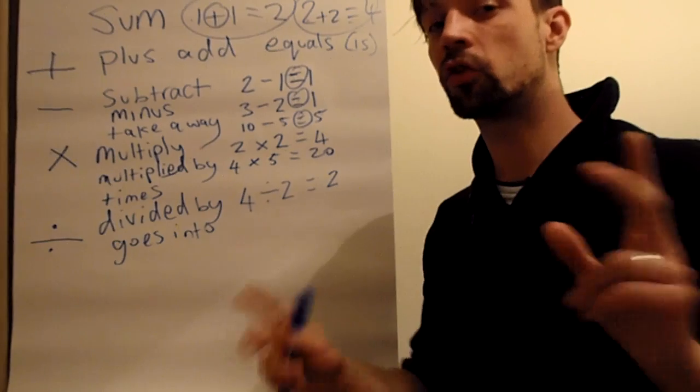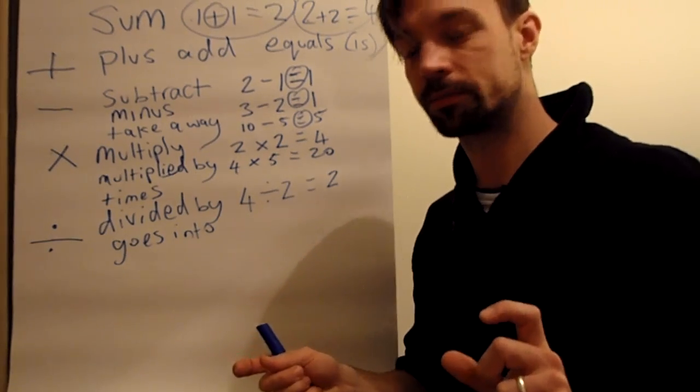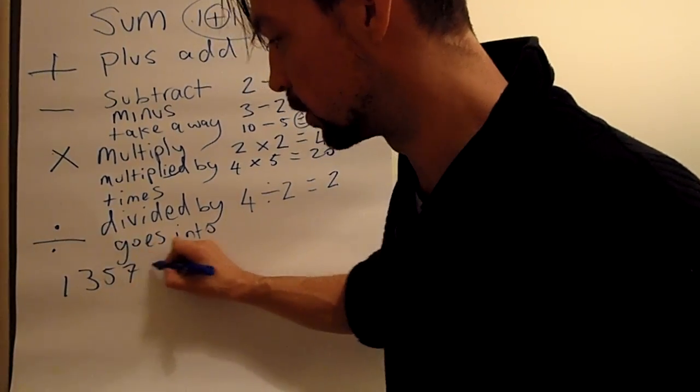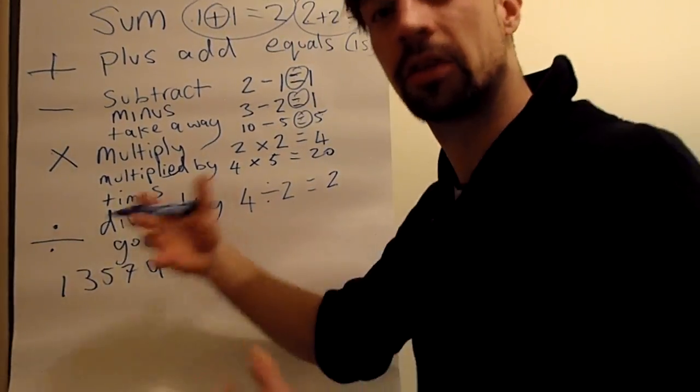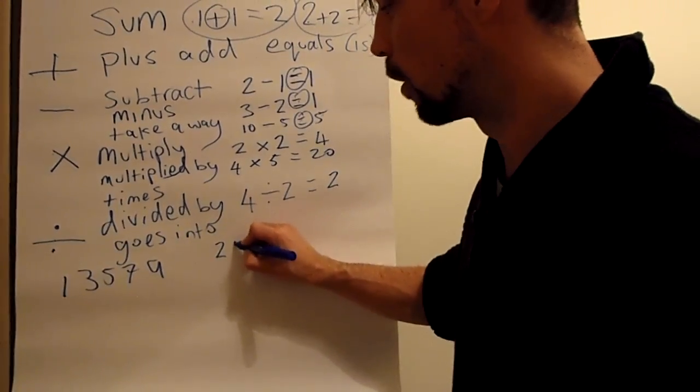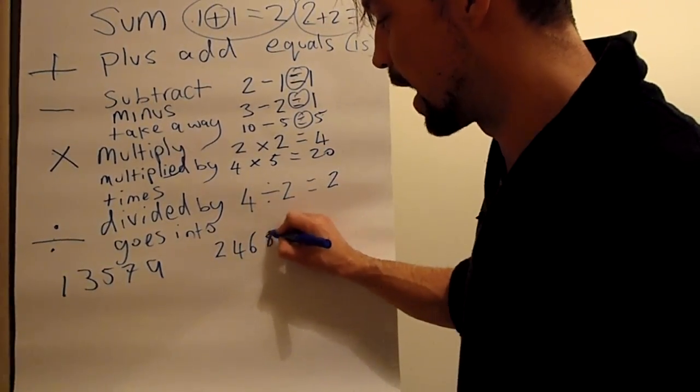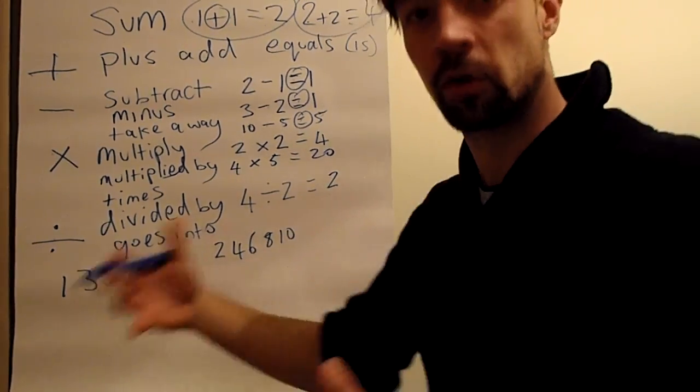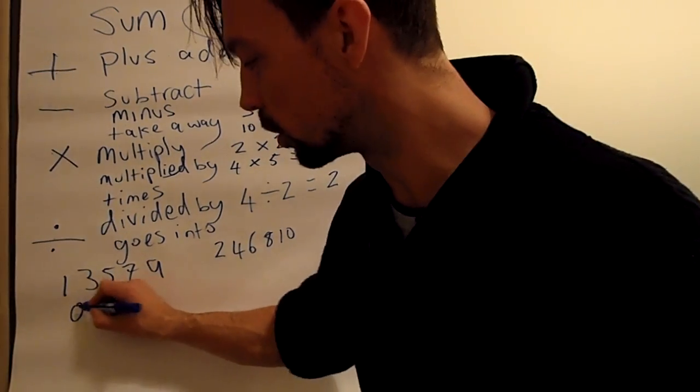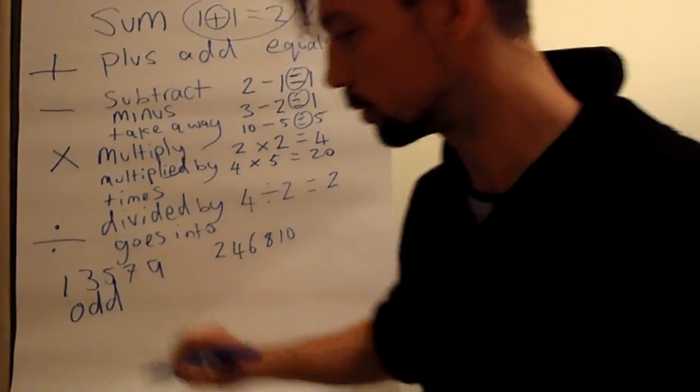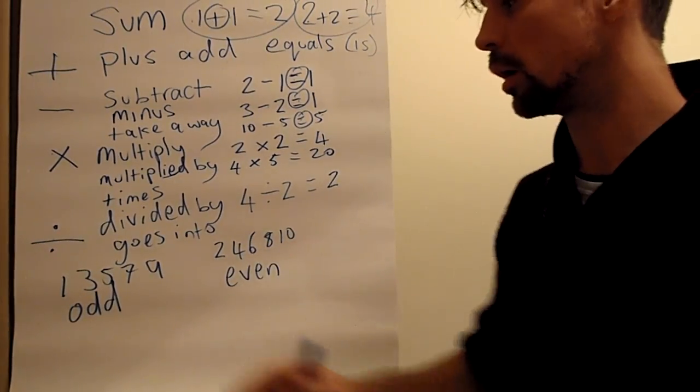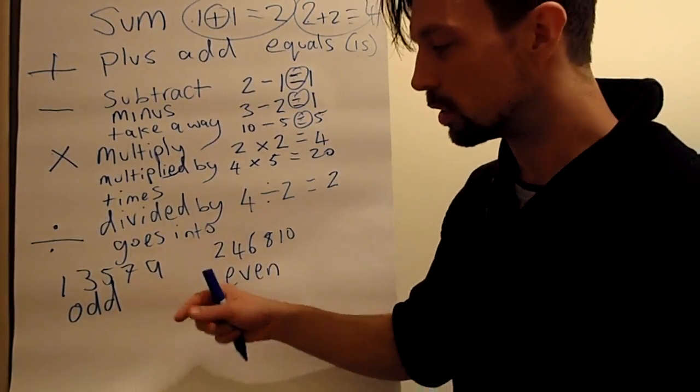A couple of other small things for you. We have two groups of numbers. The first one is 1, 3, 5, 7, 9, 11, 13, 15, etc. And the second group is 2, 4, 6, 8, 10, 12, 14, 16, etc. This first group we call odd numbers and the second group we call even.